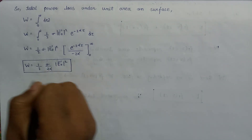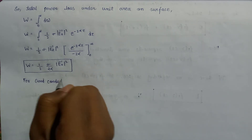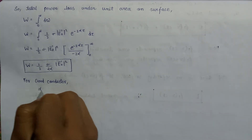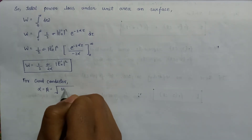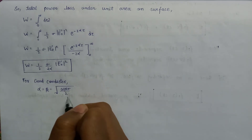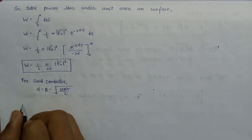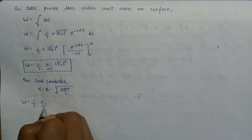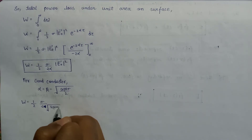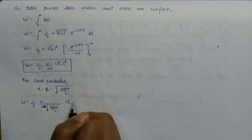For a good conductor, the attenuation constant alpha equals beta, and it is equal to the square root of omega mu sigma over 2. If we substitute this value of alpha into the total power loss expression, W becomes sigma over 2 times E0 squared, which simplifies to one-half times sigma over the square root of 2 omega mu sigma, times E0 squared.